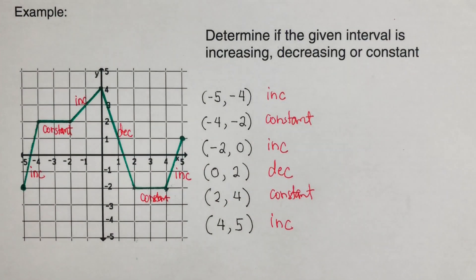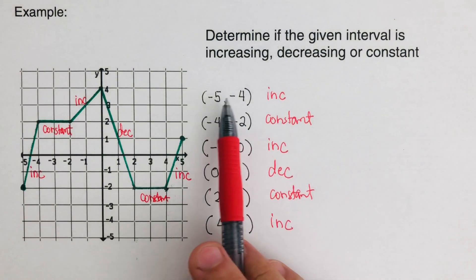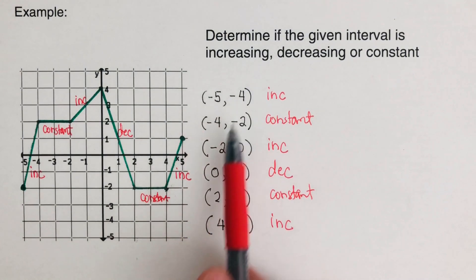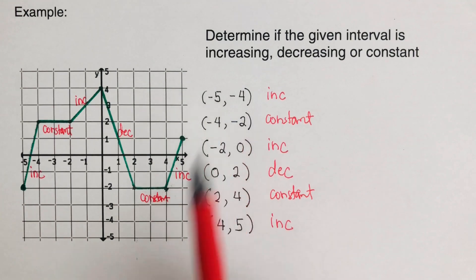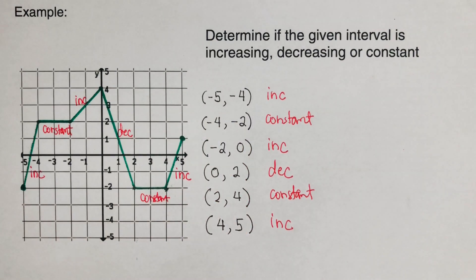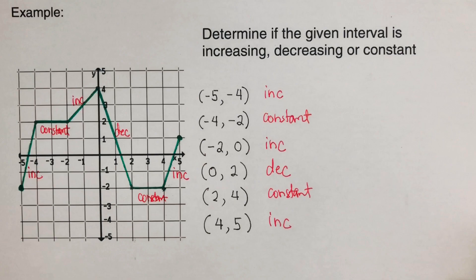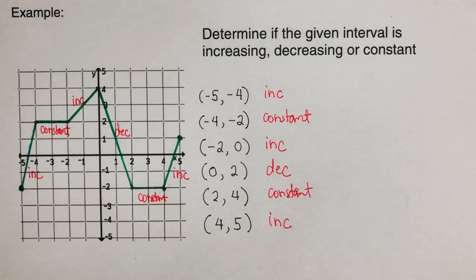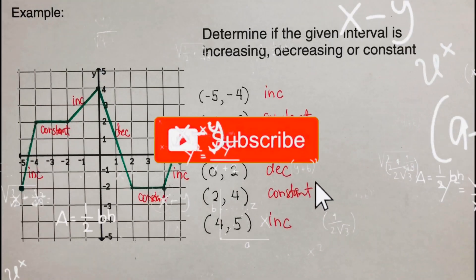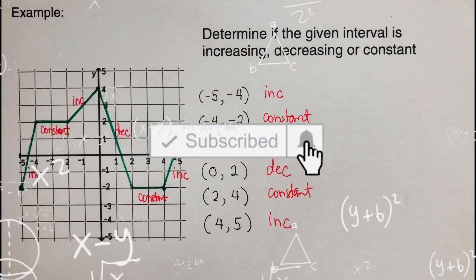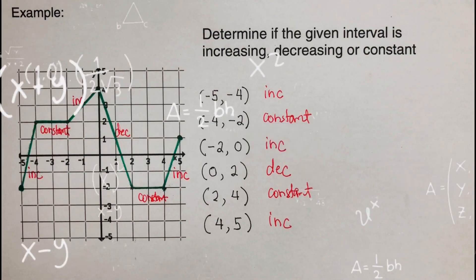And from four to five, it is increasing. Just a reminder: the values inside these parentheses are not an ordered pair — it's not a point on the graph. Did you get the same answers? Good. If you find this video helpful, hit like and subscribe for more math videos.